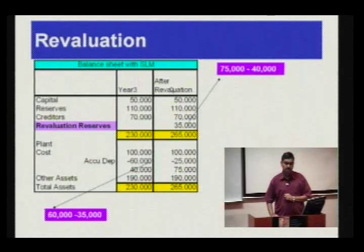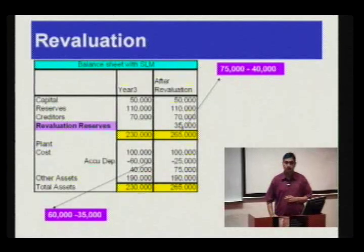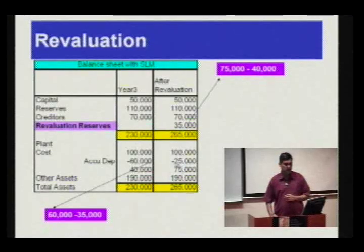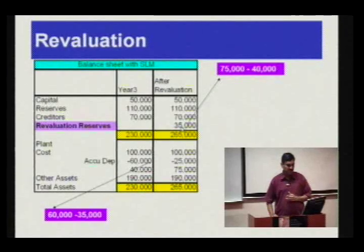After revaluation: before revaluation the book value is 40,000; after revaluation I would like to show the revalued asset at 75,000. So I have to create a revaluation reserve of 35,000, and a corresponding adjustment has to be done on accumulated depreciation — the accumulated depreciation is reduced by 35,000, which is the revaluation reserve.